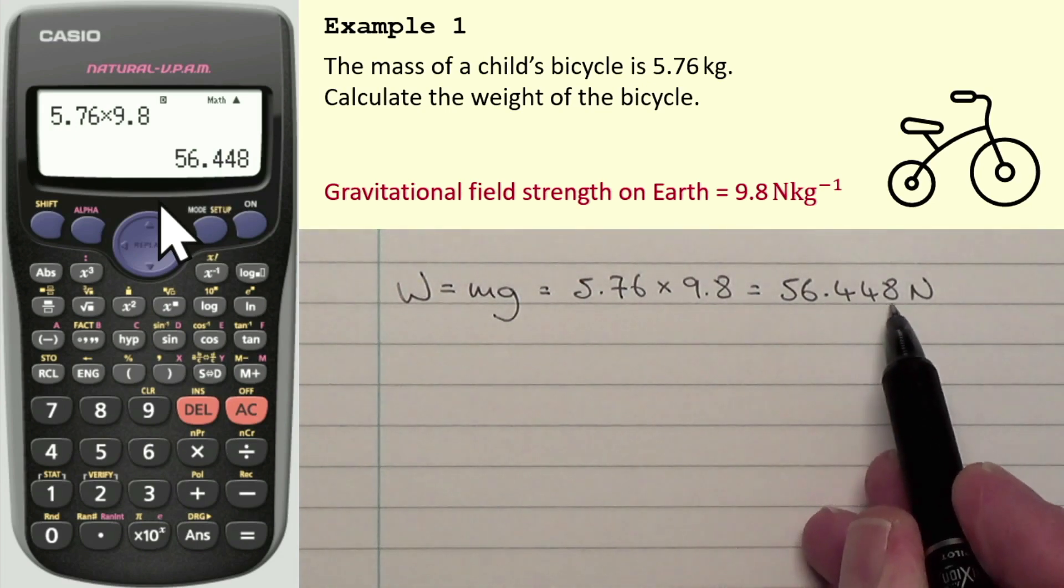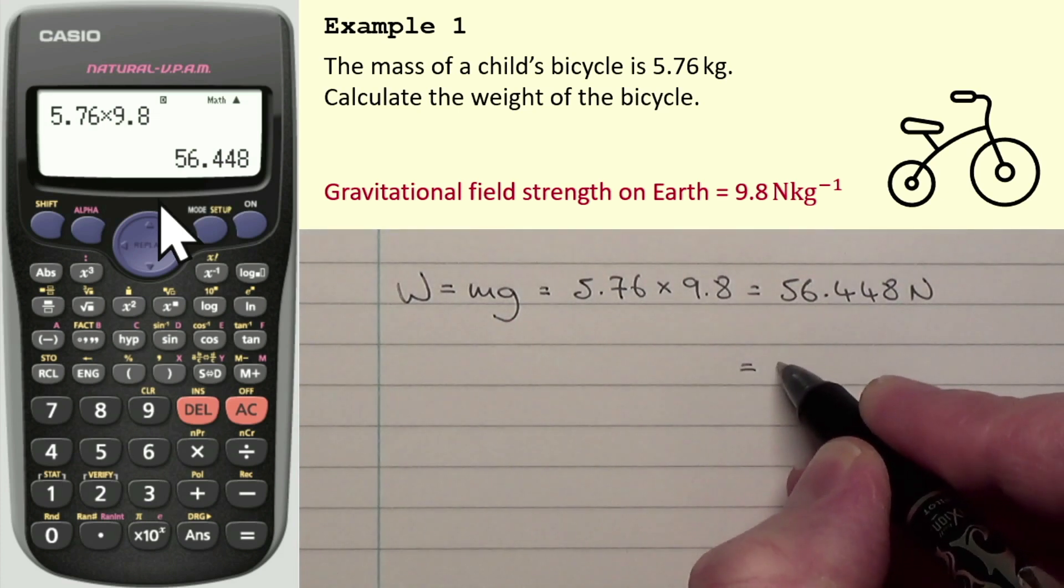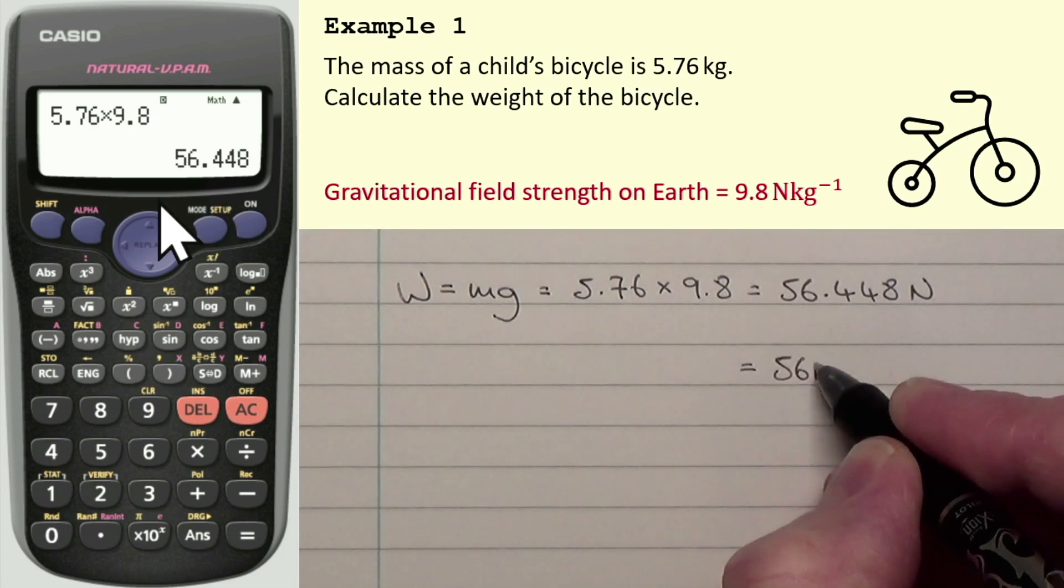Now, the thing here is I have got 5 significant figures. The previous slide told us, basically, that your final answer should have the same number of significant figures as the number in the question with the least significant figures. So we have two numbers that we used for that calculation. This is one of them. The mass has three significant figures. And G, gravitational field strength, has two significant figures.